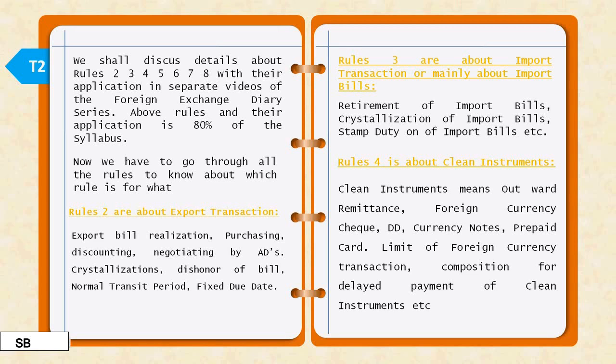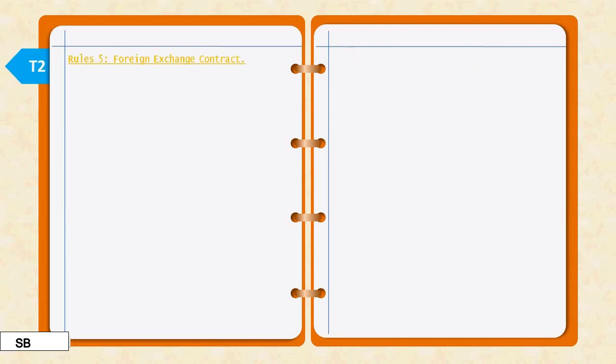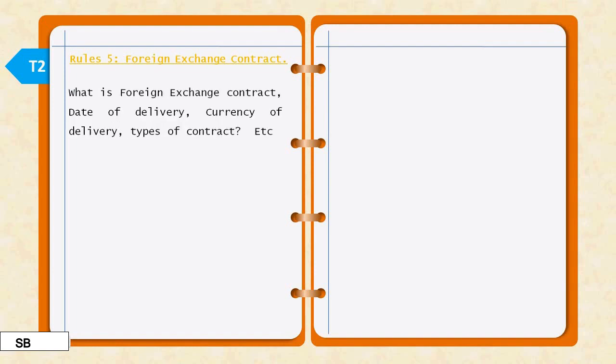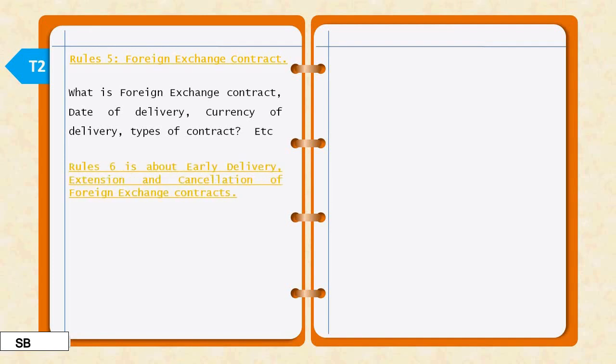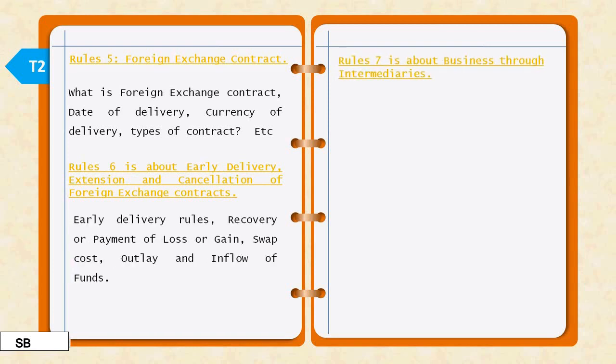Rules number 4 talks about clean instruments like foreign currency cheques, TD currency notes, and prepaid cards. Rules number 5 is about foreign exchange contracts — how forward contracts are made and how they are cancelled. Rules number 6 talks about early delivery, extension, and cancellation of foreign exchange contracts.